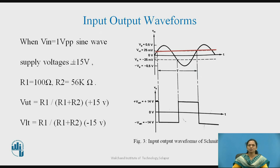As long as the input is less than VUT, it will be at the +Vsat level. But when it crosses the VUT value, it will switch from +Vsat to −Vsat and remain in that state. When the output voltage falls below VLT, it switches from −Vsat to +Vsat.